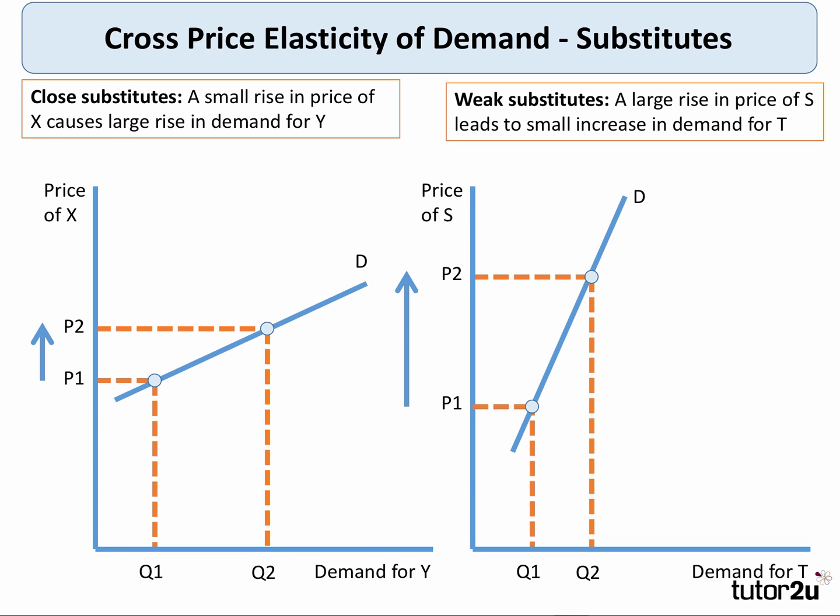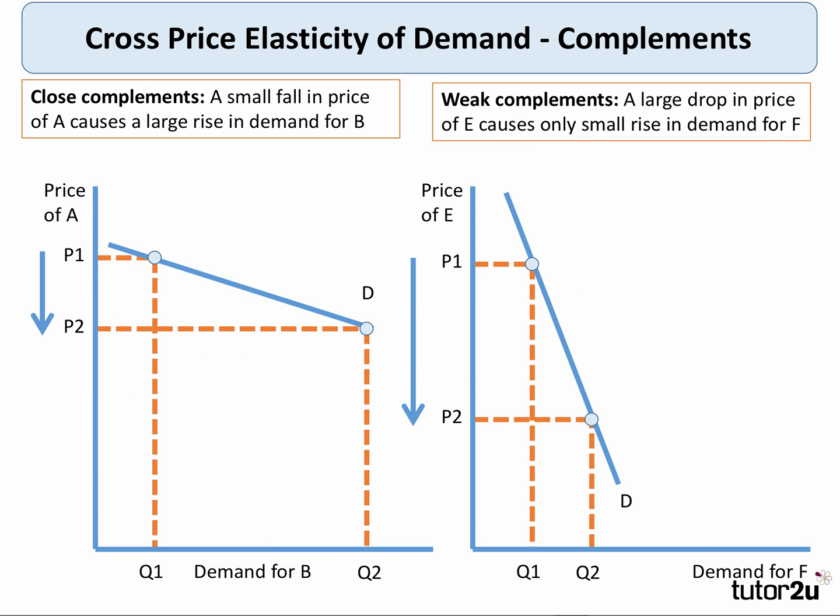Cross price elasticity for substitutes is always positive. For close substitutes you get a big substitution effect — the price of X changes and demand for Y changes significantly. If they're weak substitutes, a big increase in the price of S leads only to a small change in demand for T. For complementary goods, the cross price elasticity is always negative. In the left-hand diagram we have a close complement: a small fall in the price of A leads to a big complementary demand for B. For a weak complement the relationship is smaller and the coefficient is less.